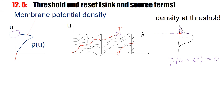The result is that the density of the membrane potential at U equal theta is zero — it cannot be like this, but the membrane potential distribution must be like this. Furthermore, once a neuron has fired its membrane potential is re-injected at zero, and this will lead to a kink of the distribution at zero, as we will see in the following.